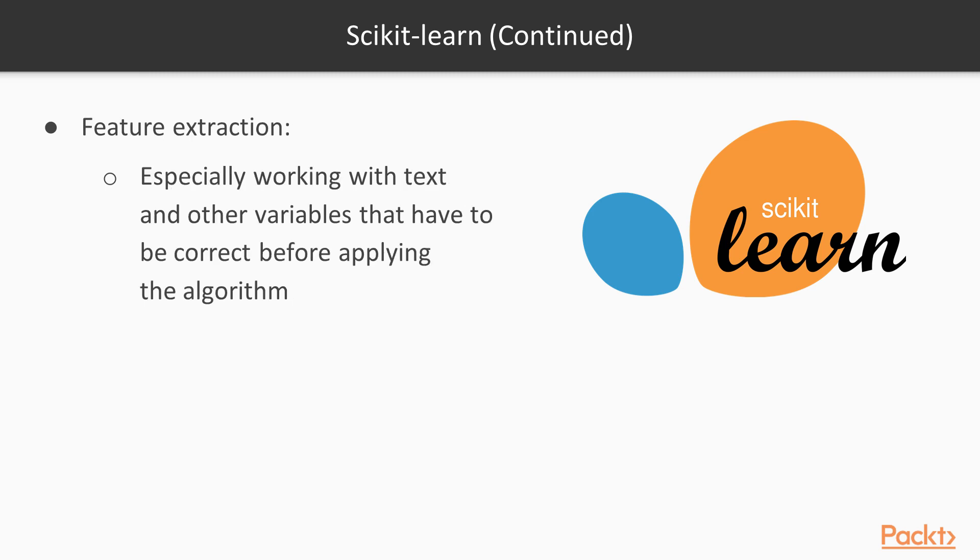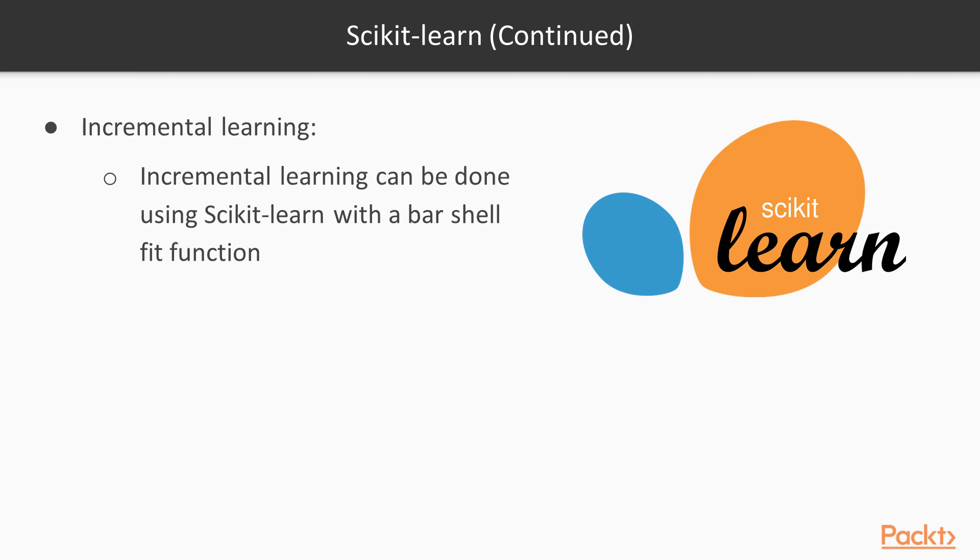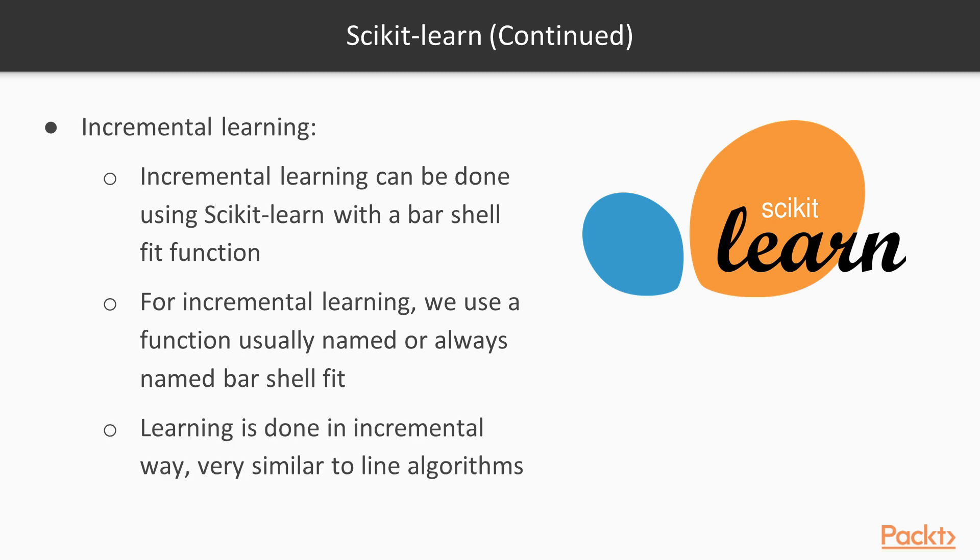Second, it's concerned with feature extraction, especially when working with text and other variables that have to be all read first before applying the algorithm. Last, we talk about incremental learning, and this can be done using scikit-learn with a partial fit function. Remember that we use the fit method to do the training, and then we use the predict and test and evaluate methods. But for this incremental learning, we use a function usually named or always named partial_fit. This way, the learning is done in an incremental way, very similar to online algorithms.